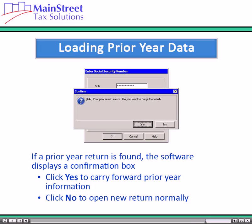If a prior year return is found, the software displays a confirmation box. If you click the Yes button, the software carries forward the prior year information and opens a new return in the current year. If you click the No button, the software starts the return as you normally would.